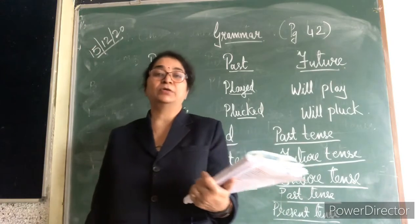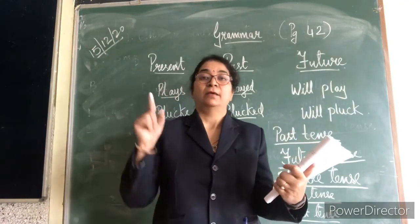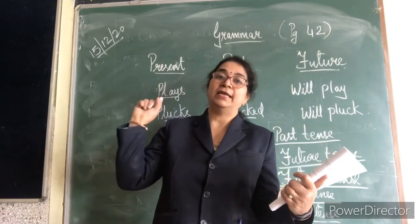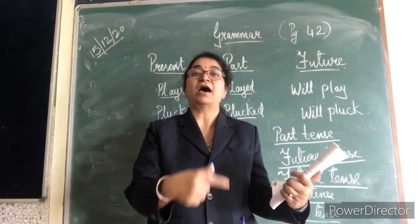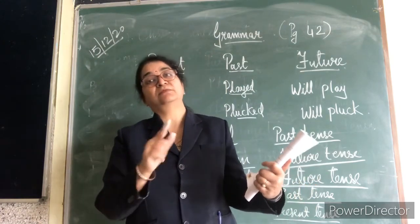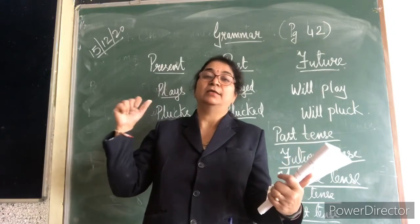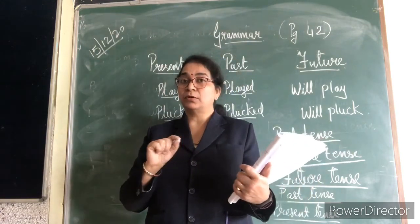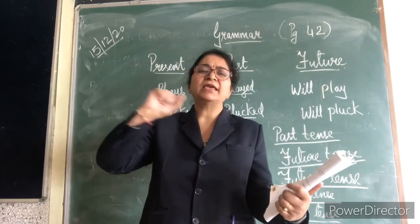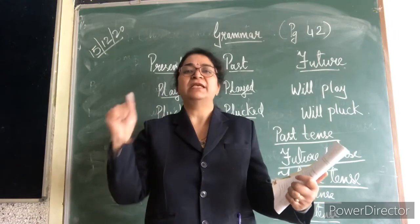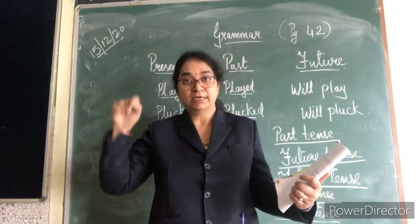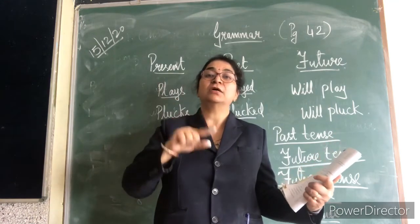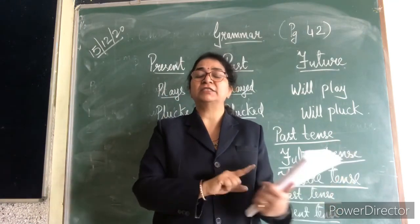Hope you all understood about tenses. Once again: present is abhi — what is happening; past is pehle — what has already happened; and future is jo hone wali hai — what will happen afterwards. Remember these three things and you will be perfect.